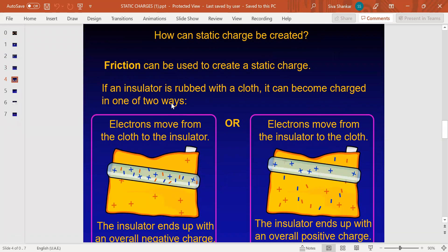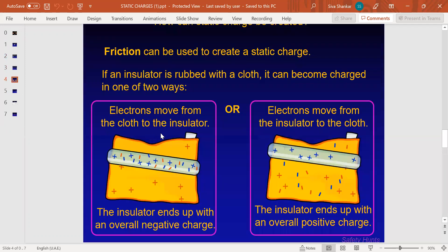Now we will see how static charges can be created. Friction is a major factor in creating static charge. If an insulator is rubbed with a glove, it can become charged in two ways. In this diagram, if you rub the insulator with the glove, either electrons move from the glove to the insulator, giving the insulator an overall negative charge, or electrons move from the insulator to the glove, giving the insulator an overall positive charge.